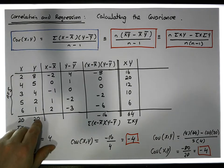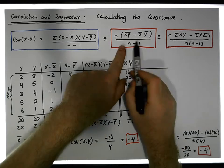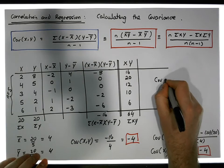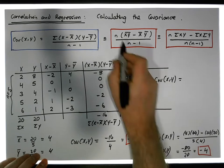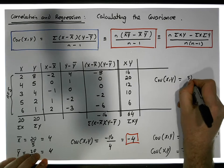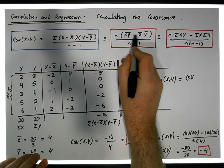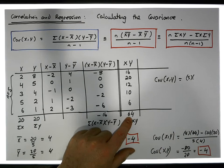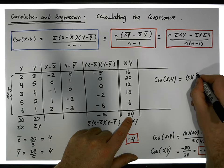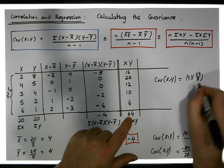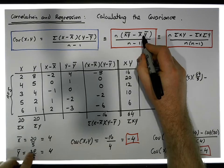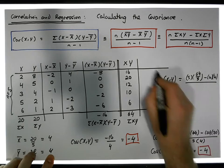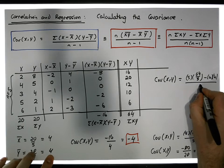Finally, we could use the third formula: the covariance of x and y equals n times the average of the x*y column, minus the average of x times the average of y, all divided by n minus 1. So it's 5 times the average of the x*y column, which is 64 over 5, minus the average of x (which is 4) times the average of y (which is 4), all divided by 4.